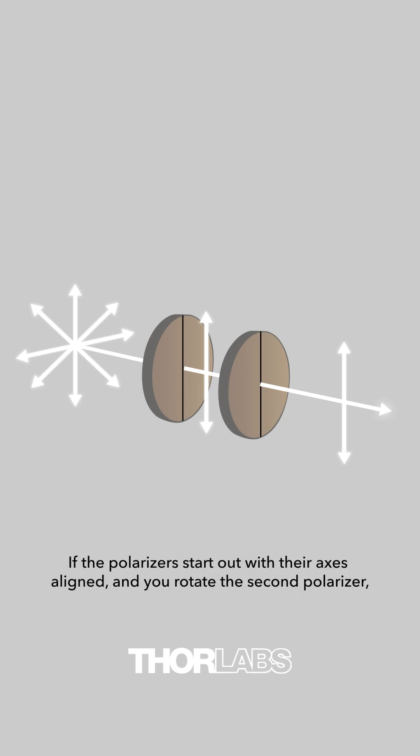If the polarizers start out with their axes aligned and you rotate the second polarizer, you'll notice that the light dims before completely disappearing, then becomes bright again.